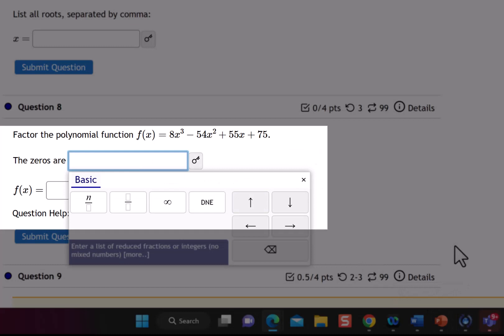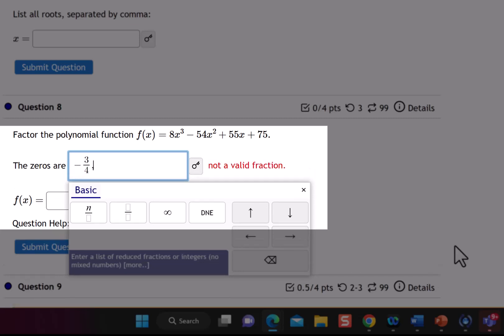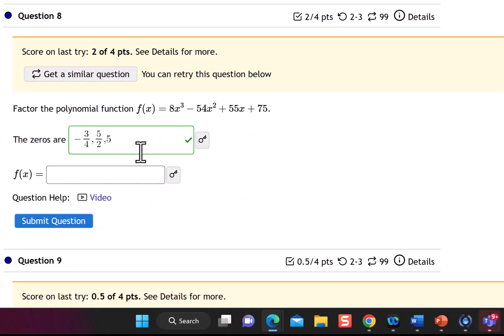So let's go ahead and enter those in. I'm going to put in my answer as fractions instead of decimals. So negative 0.75, I'm going to put in as negative 3 over 4. Then 2.5, I'm going to put 5 over 2. And then the last one was 5, so let's enter that in. And we can see we got that part correct.